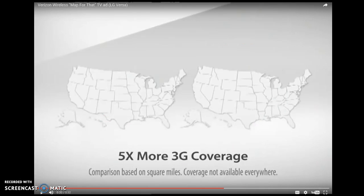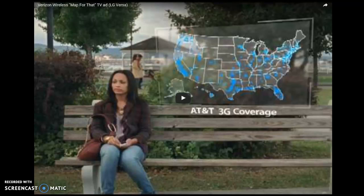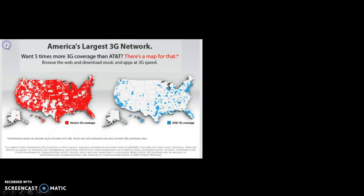Verizon was using the two maps to show that their customers have more coverage. They do say '3G coverage,' but with a woman acting as if she can't use her phone at all, it's suggesting that 3G coverage really equals cell phone coverage — and we know that's not true. 3G does not equal all cell phone coverage. You could have AT&T, go to North Dakota, and have perfectly fine cell phone coverage and internet service.